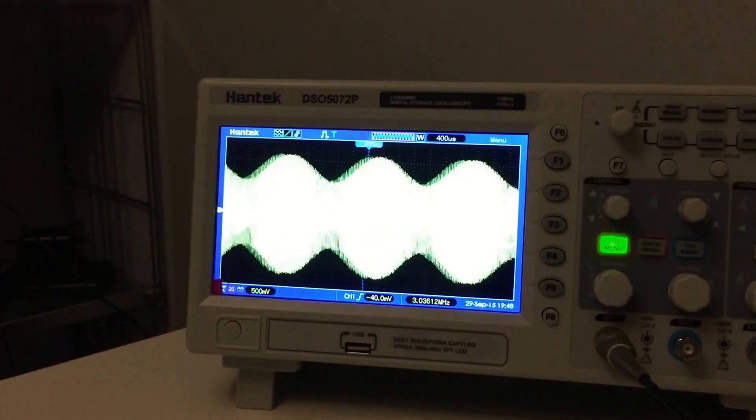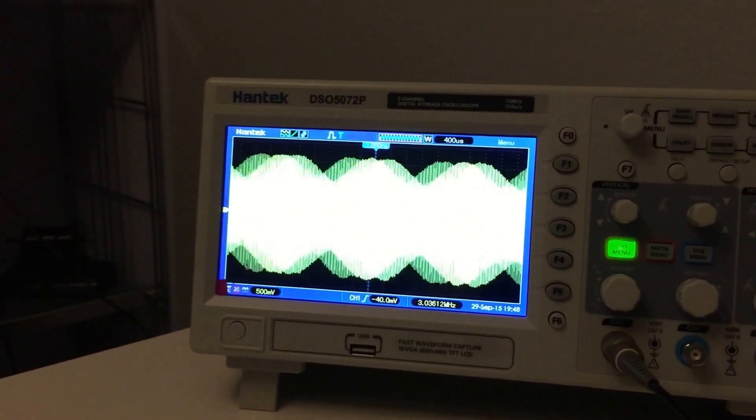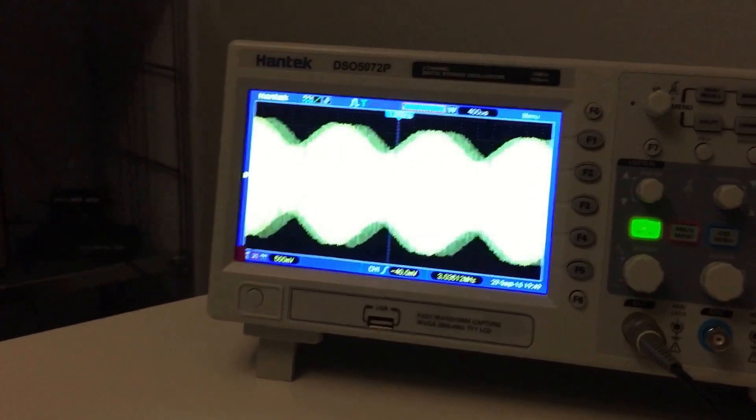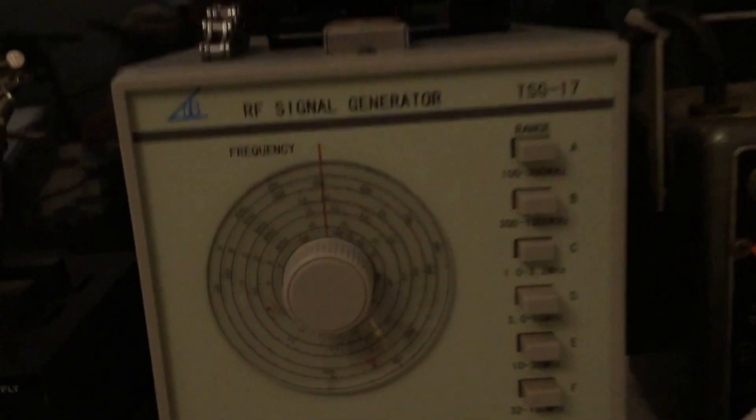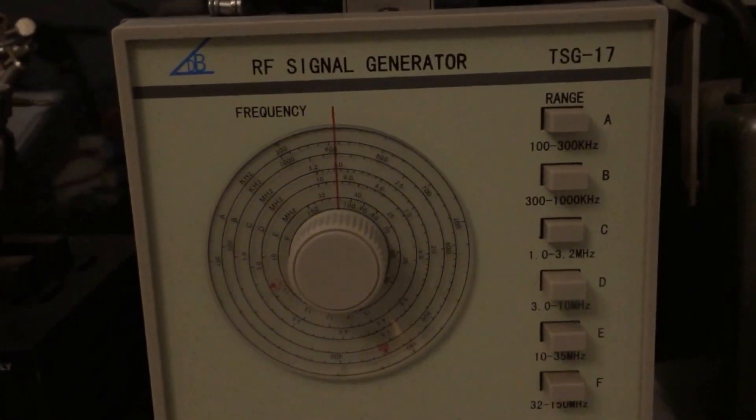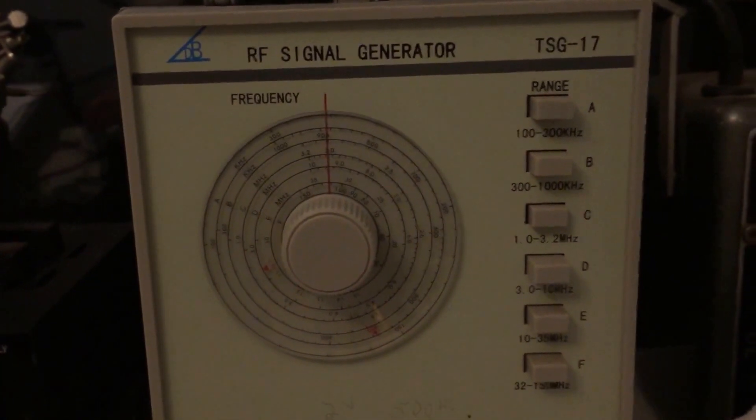Now I'm using my TSG17 on the DSO5072P, and it's my RF signal generator that I use for antique radios. And I have it set on 3 MHz in and around.